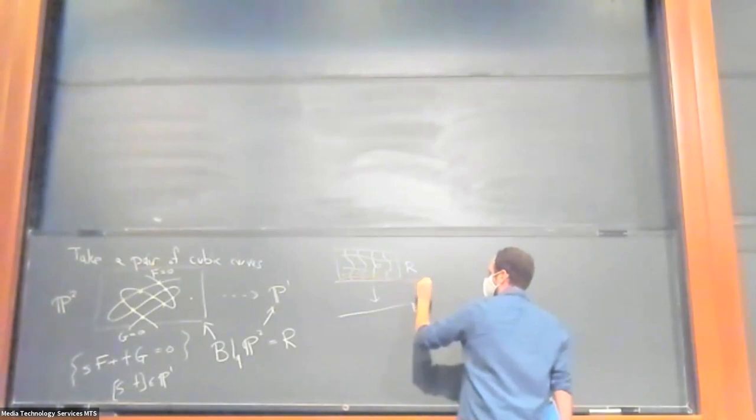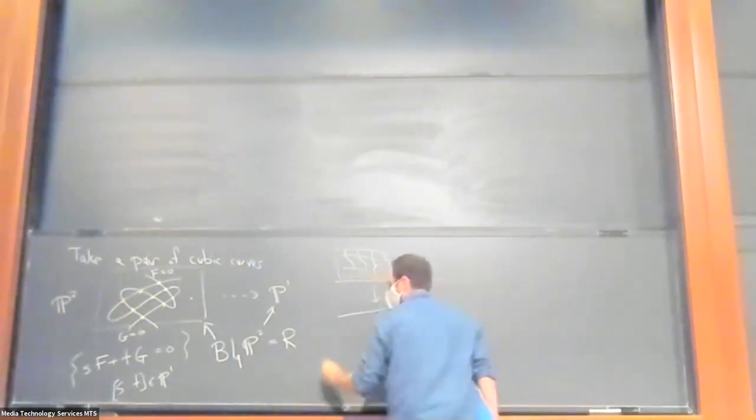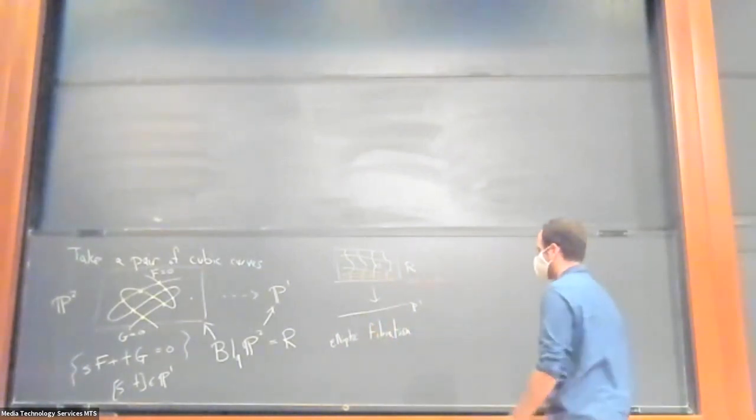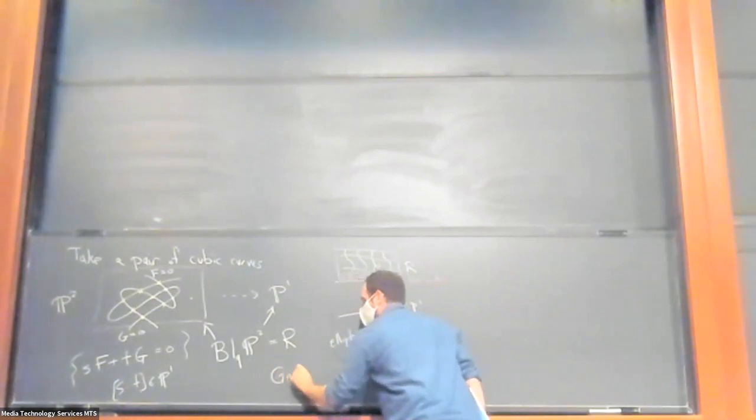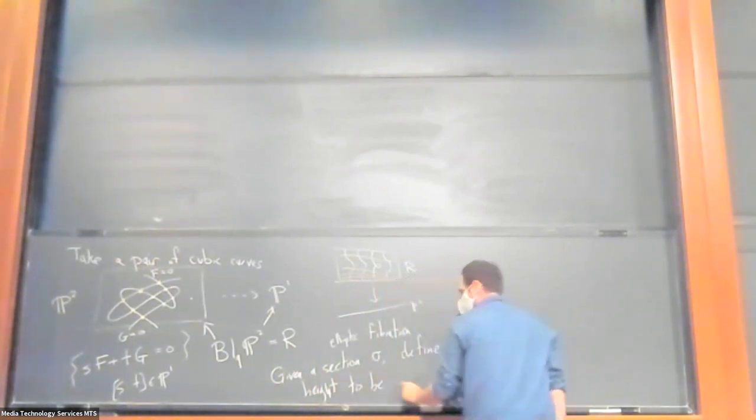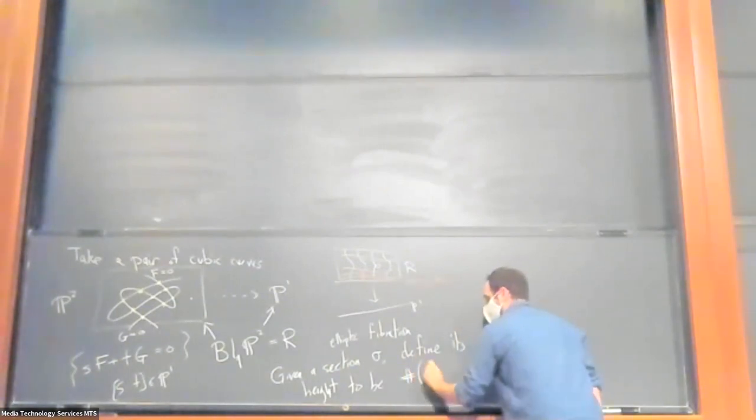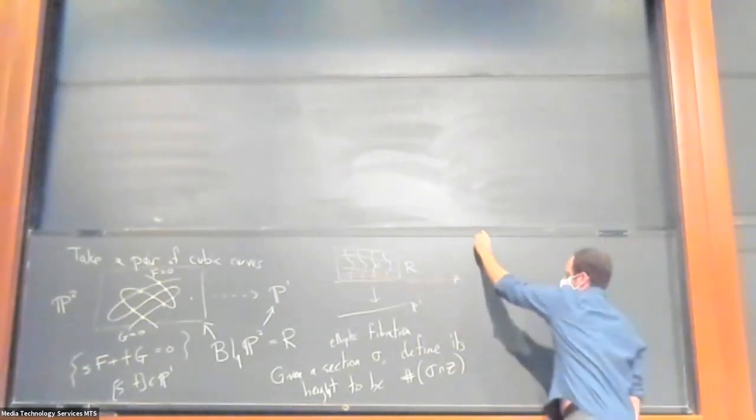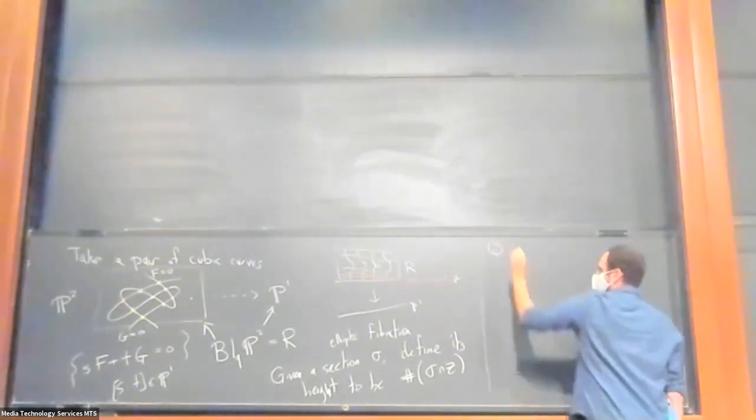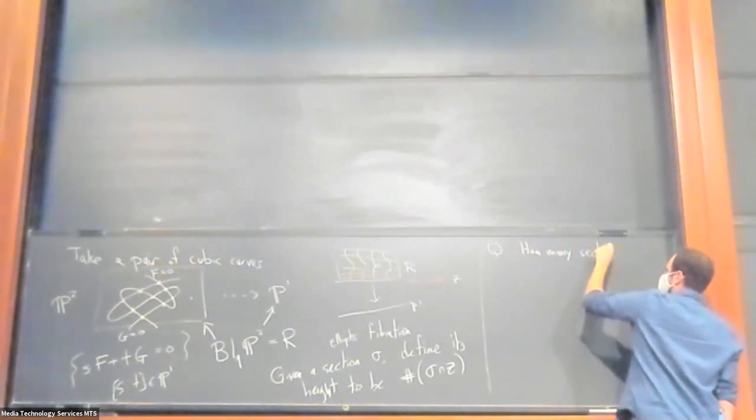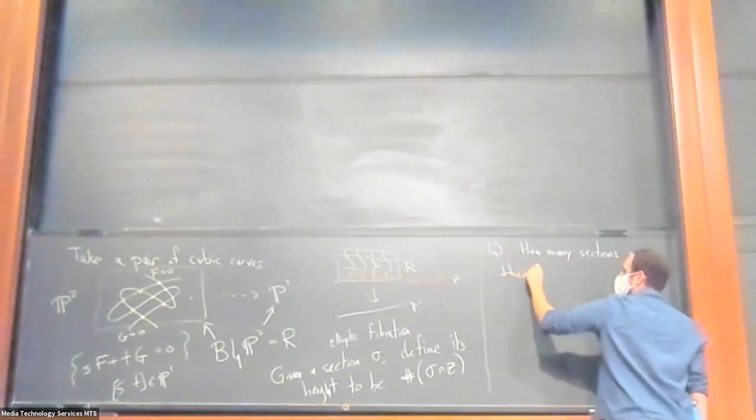So this is the zero section, which gives me a group law on my elliptic curves. And so for a general section, sigma defines its height to be just the number of times it meets the zero section. The number of times it intersects the zero section Z. So a good exercise to kind of see what's going on here and why it's interesting is to ask how many sections are there of height zero.